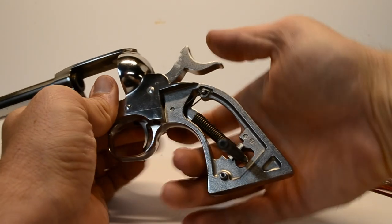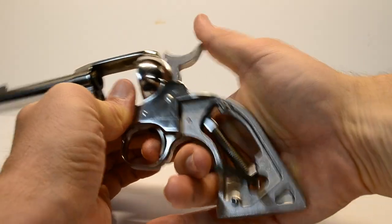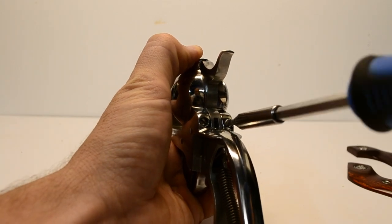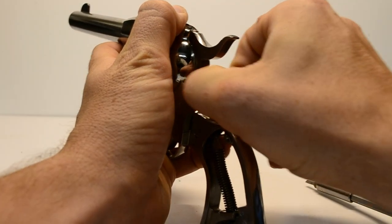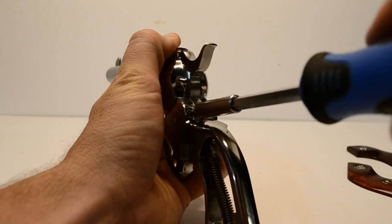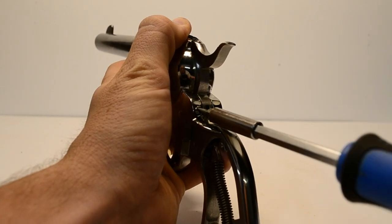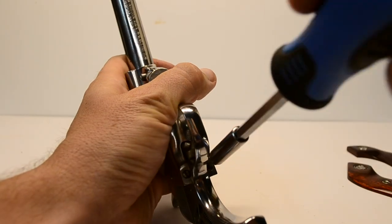Insert a small punch into the hole at the bottom of the mainspring assembly. Next, unscrew and remove the grip frame screws beginning with the ones on the back of the grip frame and working your way forward towards the barrel.